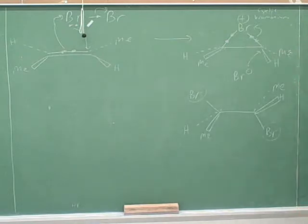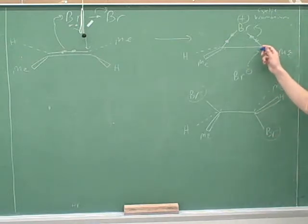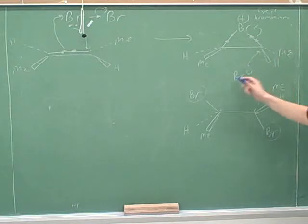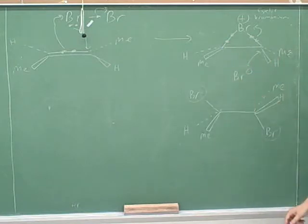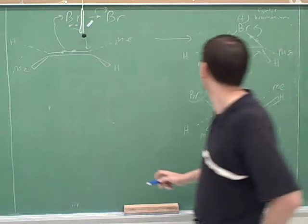Something we should be worried about, though, is how did I know the bromine was going to attack the right-hand carbon? It seems like it could just as well have attacked the left-hand carbon, so we should also show that happening.